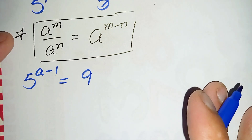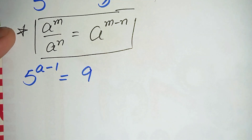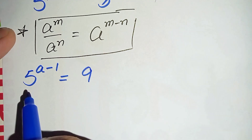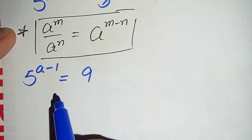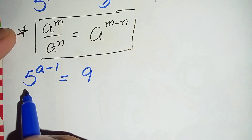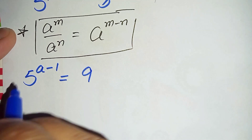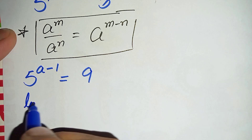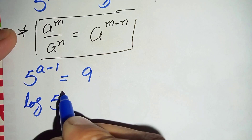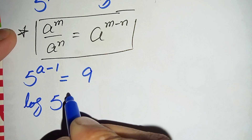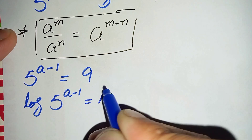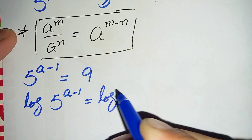In the next step we will take log on both sides to find the value of a, because there is no other way to find the value of a from the left hand side. So we take common log on both sides: log of 5 raised to power a minus 1 is equal to log of 9.